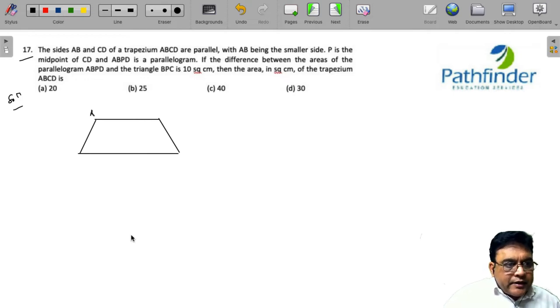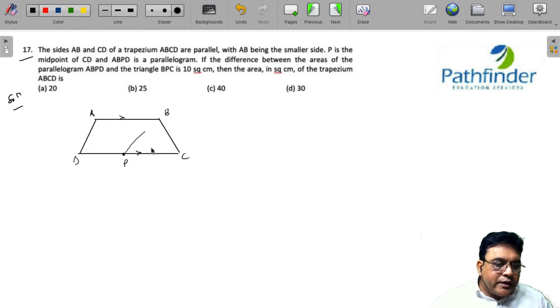And let us say these are sides AB and CD, which are the parallel sides. P is the midpoint of CD, and we say that ABPD is a parallelogram.